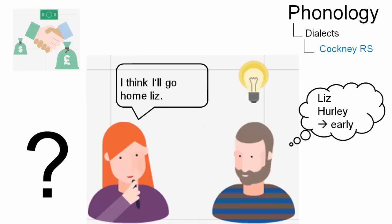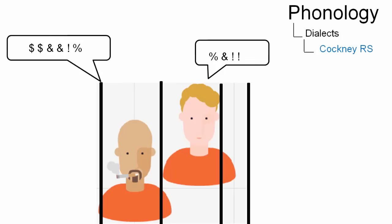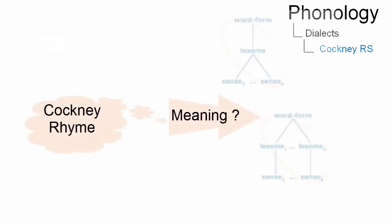Other stories say that it originated in the prisons, so that inmates could communicate without the guards understanding what was said. Some slang words have more than one meaning.